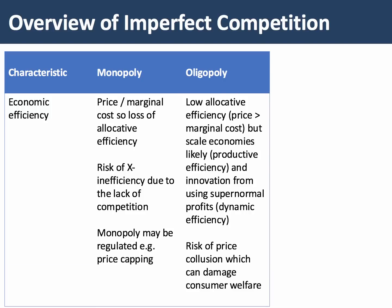In oligopoly, we tend to see low allocative efficiency, because prices exceed marginal cost. But there are lots of big firms in these industries, so scale economies are likely, which helps productive efficiency. Also, supernormal profits might spur the funding of research and innovation, which is absolutely crucial in oligopolistic markets. So dynamic efficiency might well be encouraged.